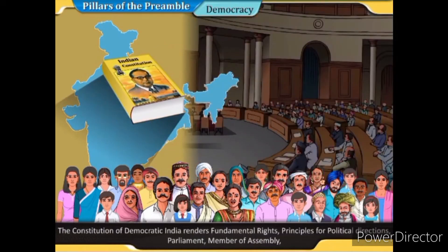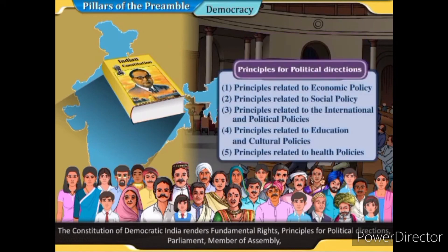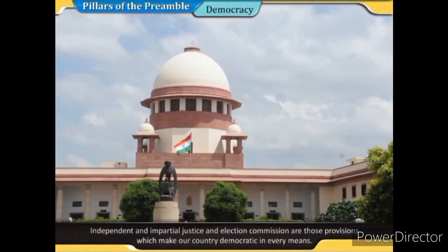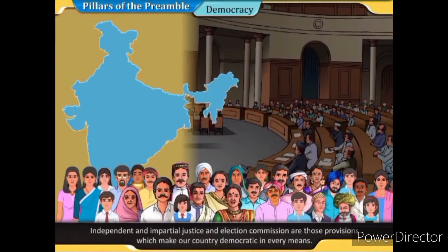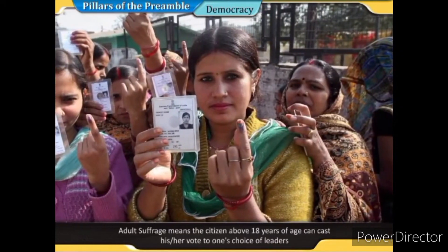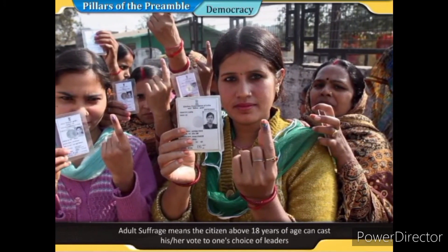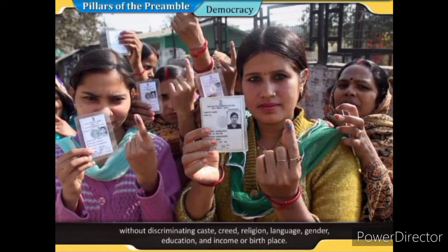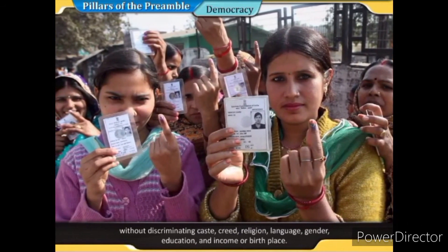The Constitution of democratic India renders fundamental rights and principles for political directions. Parliament, members of assembly, independent and impartial justice, and the election commission are provisions that make our country democratic. Adult suffrage means any citizen above 18 years of age can cast his or her vote for their choice of leaders without discriminating on the basis of caste, creed, religion, language, gender, education, income, or birthplace.